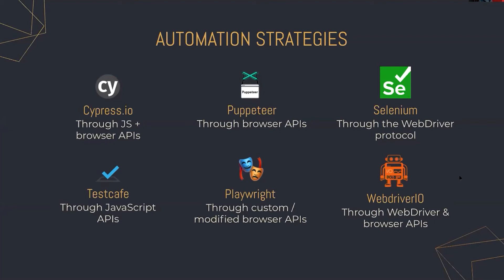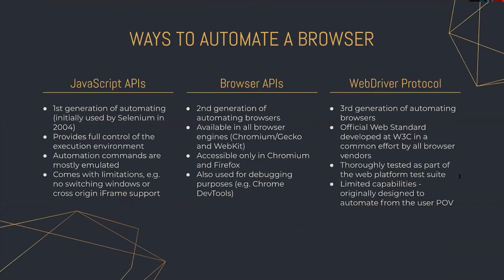WebDriver.io and Cypress actually both use a mixture of both approaches. Cypress uses browser APIs for things like saving screenshots, while WebDriver.io uses browser APIs to allow performance testing or PWA tests as part of end-to-end tests. To sum this up, there are essentially three ways to automate browsers today: through JavaScript APIs, through browser APIs, and through the WebDriver protocol. JavaScript APIs — used by tools like Cypress and TestCafe — represent one of the first generations of browser automation, as Selenium used this approach back in 2004. It provides a lot of control, but with the limitation of only running within the browser.